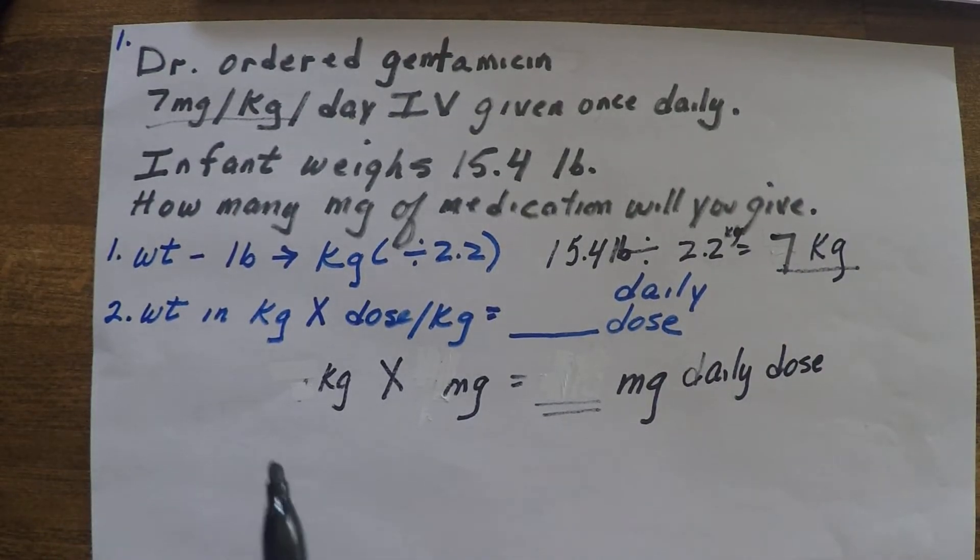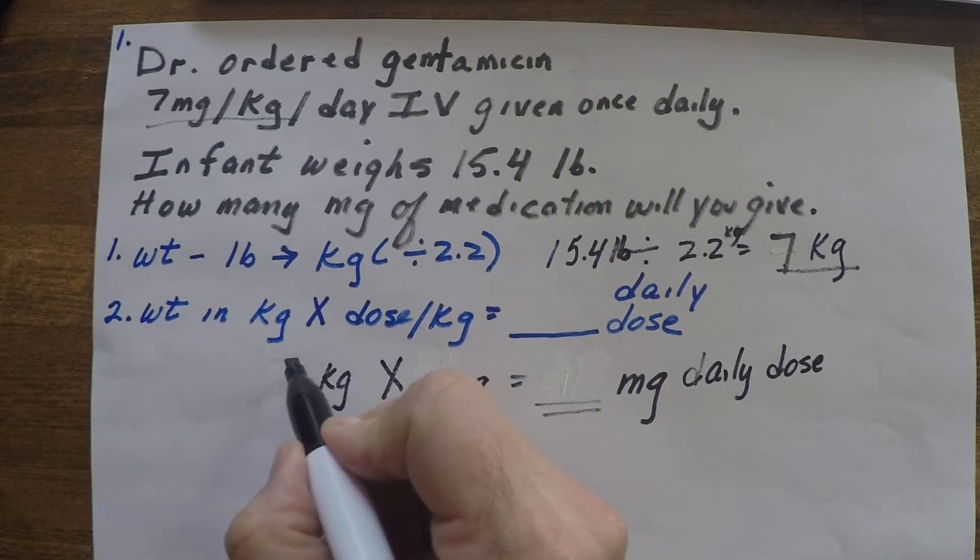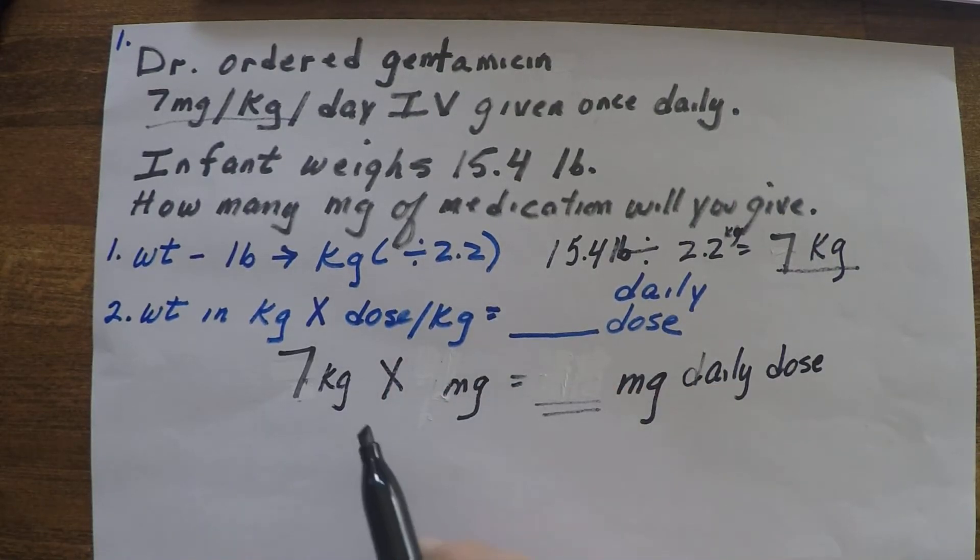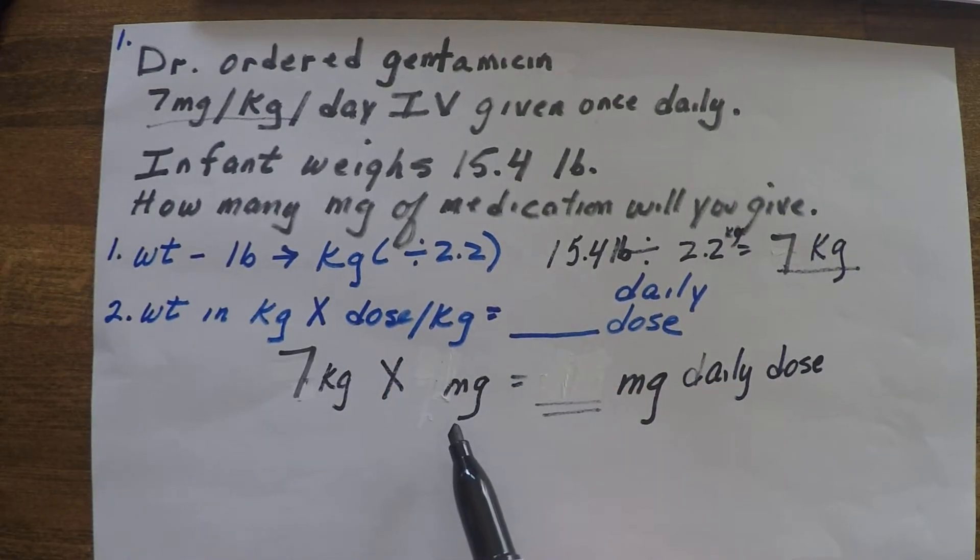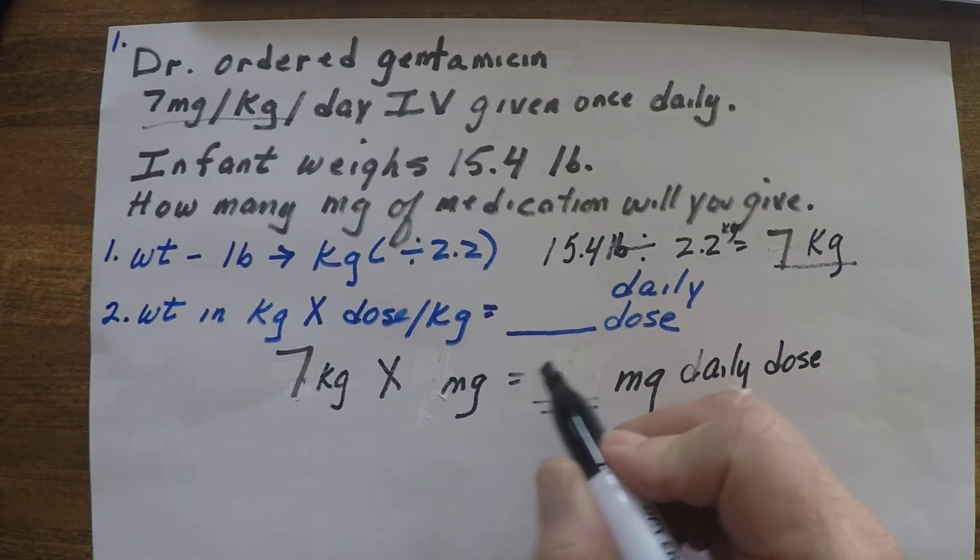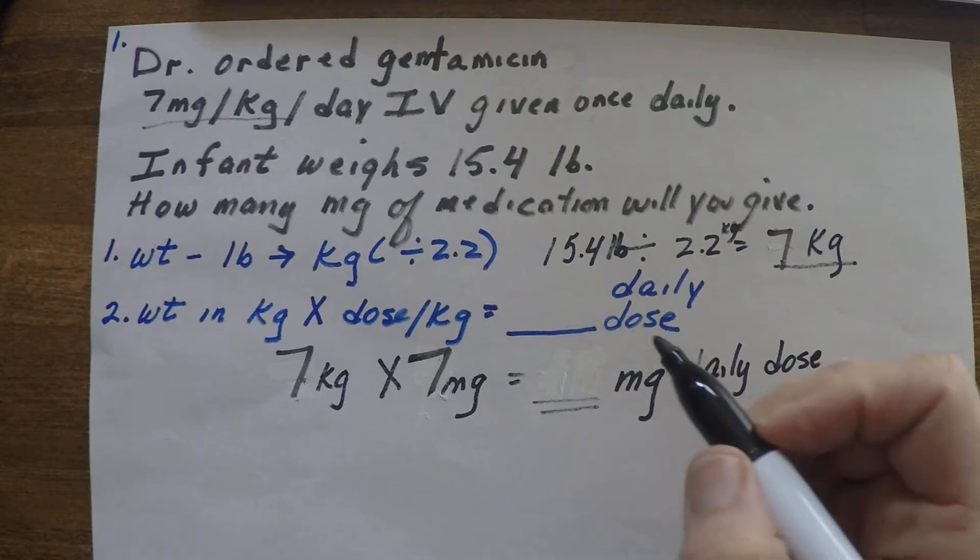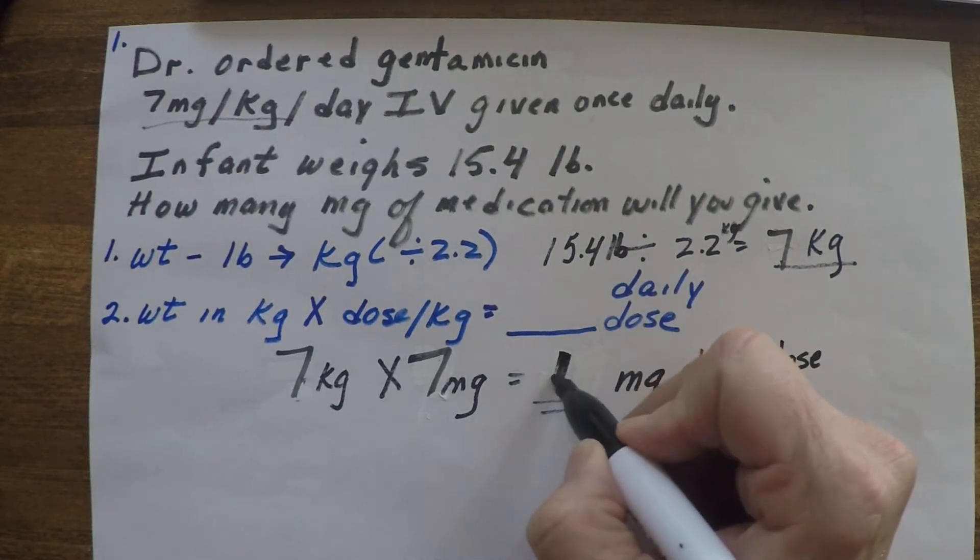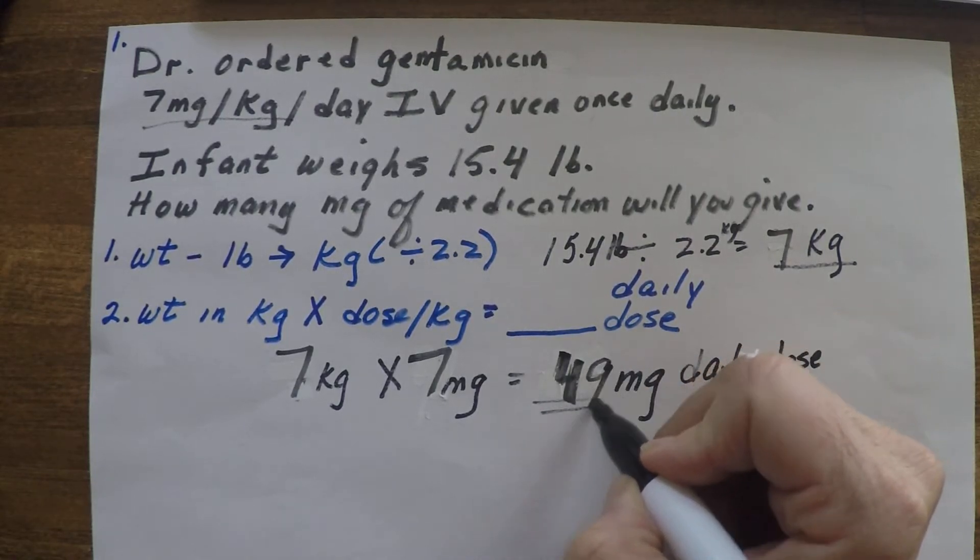So the second step, then we'll take the weight in kilograms times the dose per kilogram to give us a daily dose. So our weight in kilograms is 7. Our dose per kilogram right here is 7 milligrams per kilogram. So times 7 milligrams, and that's going to give us 49 milligrams as our daily dose, and that's it.